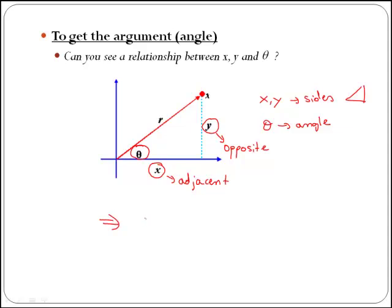Therefore, they are related through tangent. Then, tan of theta is the same as y over x. So this is the relationship we are going to use in order to get the angle.